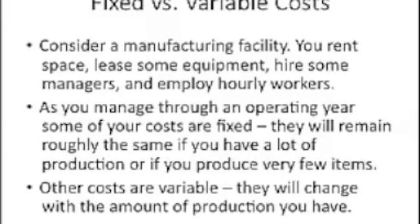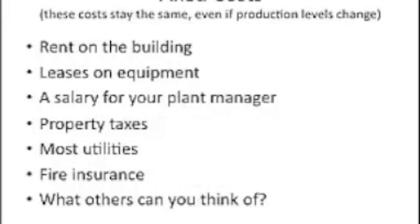We're going to be looking at both fixed and variable costs in this simplified situation. Fixed costs are the costs that stay the same even if production levels change. For instance, the rent on the building — if you make one widget a year or a thousand widgets a year, you're going to pay the same rent. So rent is a fixed cost; it does not change with the level of your output.